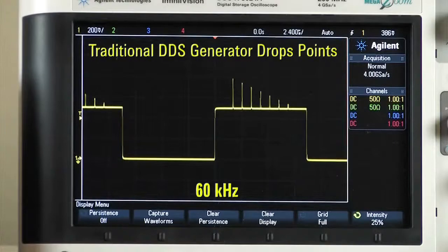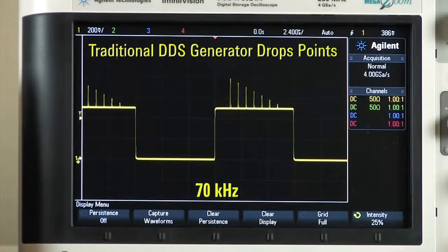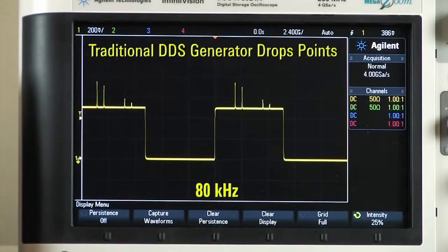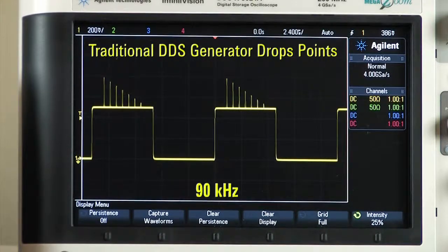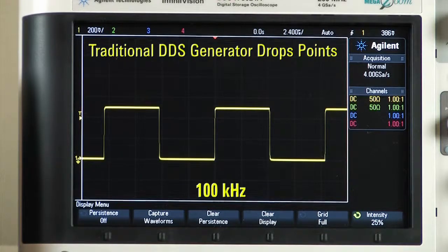There are no dropped points at higher frequencies, as can be the case with DDS-based generators. Note how with DDS, points are dropped as the frequency is increased from 60 kHz to 110 kHz.